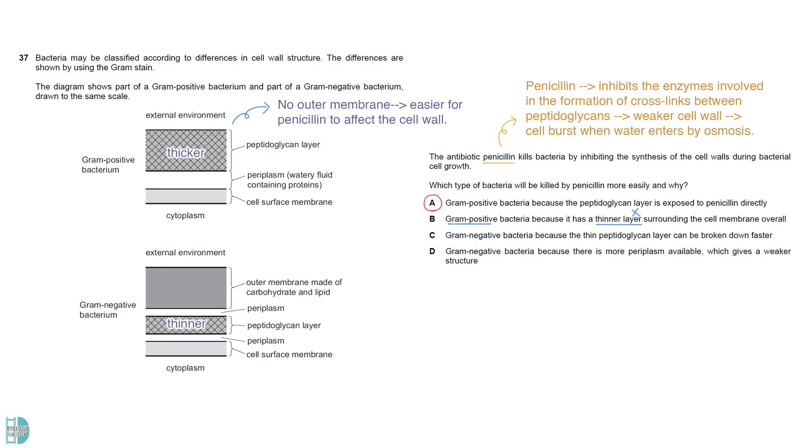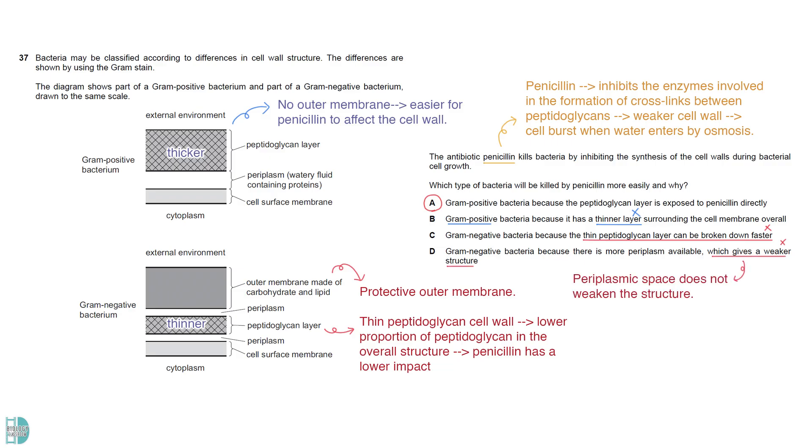C is wrong. Gram-negative bacteria have a protective outer membrane. Also, the thin peptidoglycan cell wall means that it has a lower proportion in the overall structure, thereby reducing its impact on the cell. D is wrong. The periplasmic space in gram-negative bacteria does not weaken the structure.